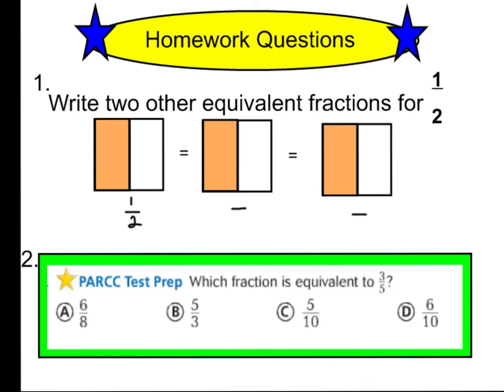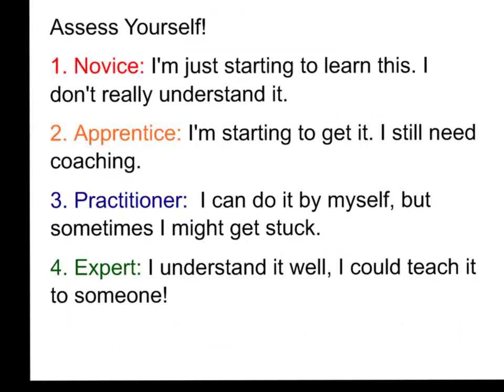So here are your two homework questions for tonight. I want you to write two other equivalent fractions for one-half. Draw the one-half model, and draw it two more times, but this time I want you to create equivalent fractions, just like we practiced. And then question number two is a park test prep question. It says, what fraction is equivalent to three-fifths? Could it be six-eighths, five-thirds, five-tenths, or six-tenths? You may have to draw models to figure that out. And then when you're done with this, I want you to assess yourself. Remember, if you feel like you're level one, it means that you're a novice. You're just starting to learn this, and you don't really understand equivalent fractions. If you feel like you're a novice, I do want you to re-watch this video.